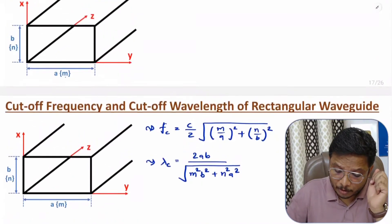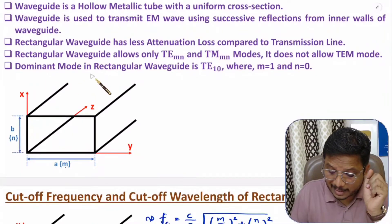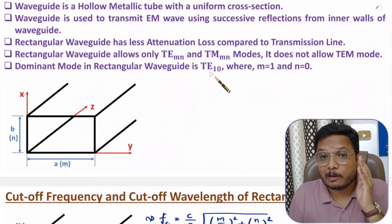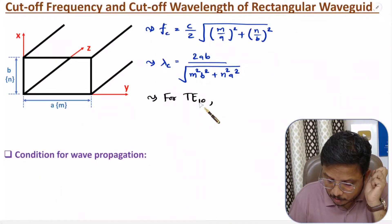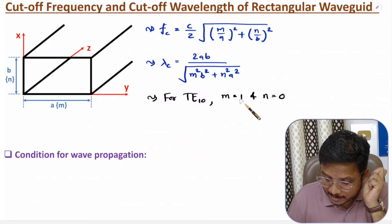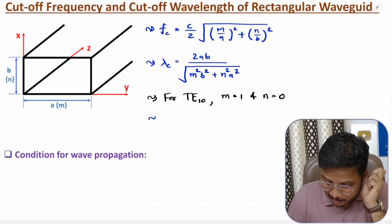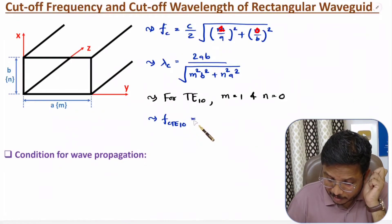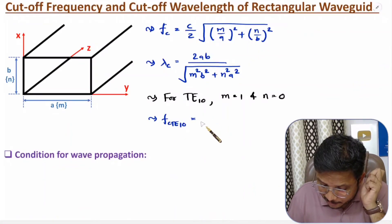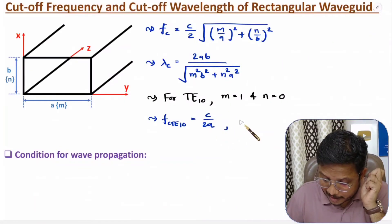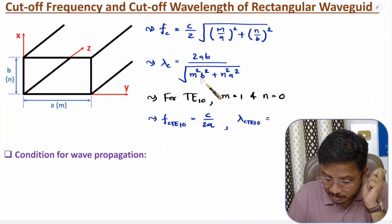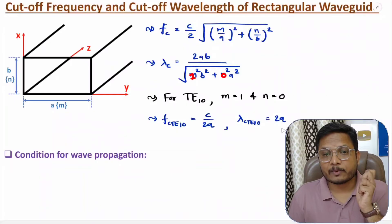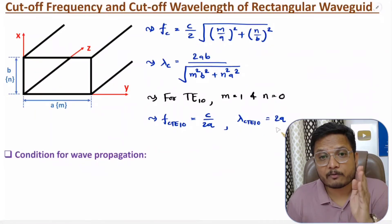Let me take one example. With the dominant mode TE10, M equals 1 and N equals 0. Substituting into the cutoff frequency equation gives FC = C divided by 2A. And substituting into the cutoff wavelength equation gives lambda_C for TE10 equals 2A. So based on the order of the mode, we can identify the cutoff frequency and cutoff wavelength.